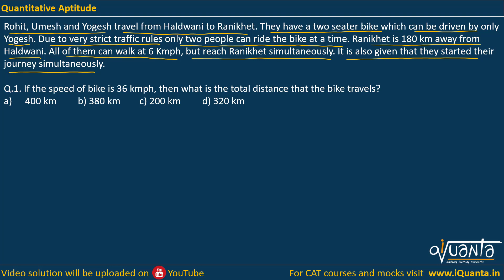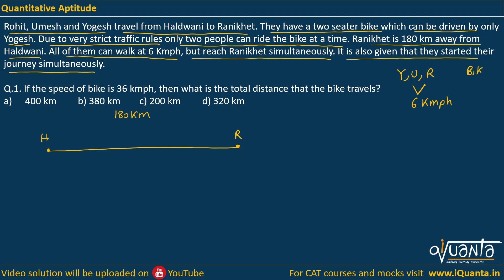So here we have two places: Haldwani and Ranikhet, with a distance of 180 kilometers between them. We have three people — Yogesh, Umesh and Rohit — who can walk at 6 kmph. We have a bike with a speed of 36 kmph. The first question is: if the speed of the bike is 36 kmph, what is the total distance that the bike travels?